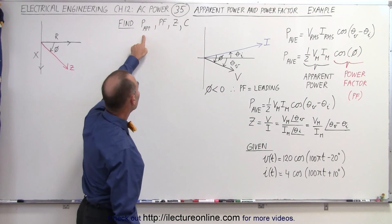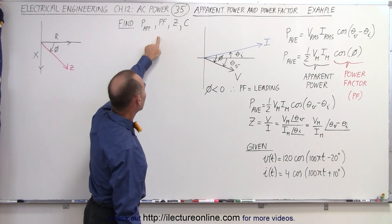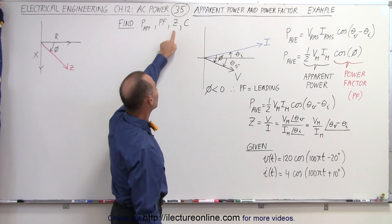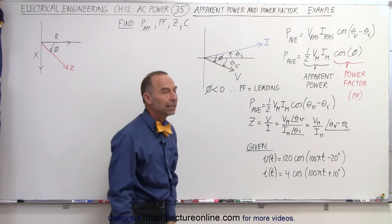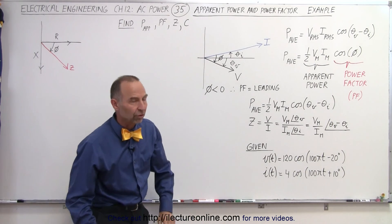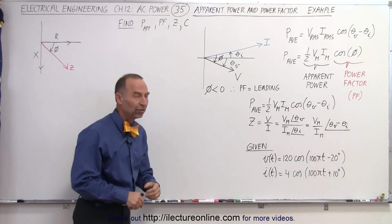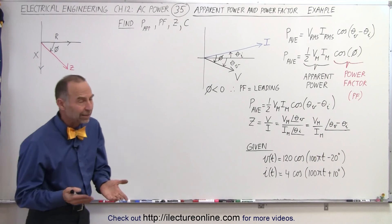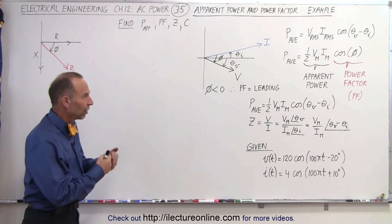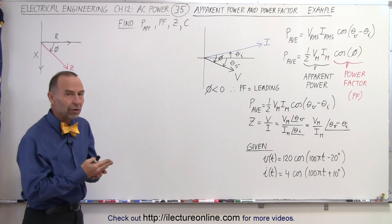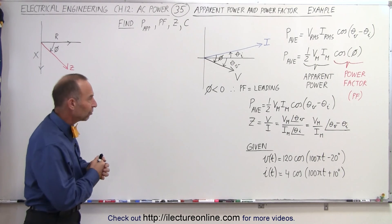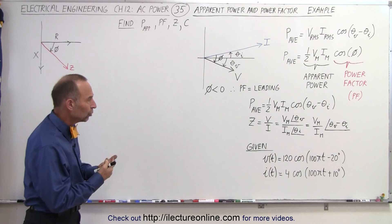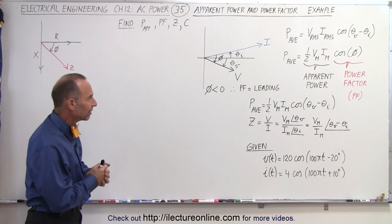The four things we want to find are: the apparent power, the power factor, the impedance in the circuit, and the capacitor in the circuit — because we'll find that this circuit appears to have capacitive reactance, and so we're also going to find the capacitor value.